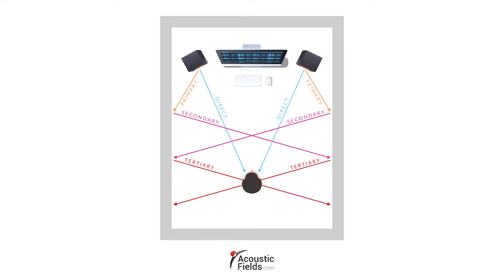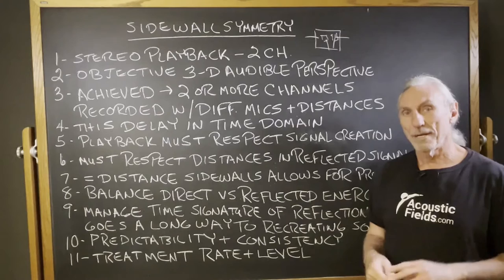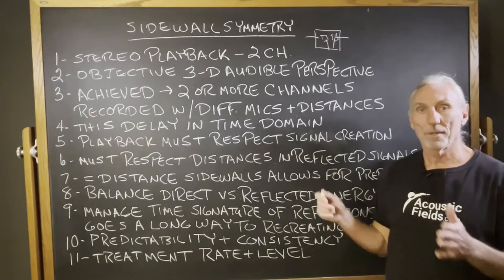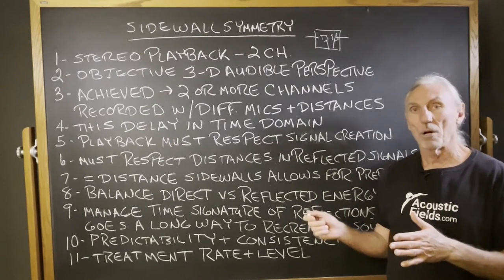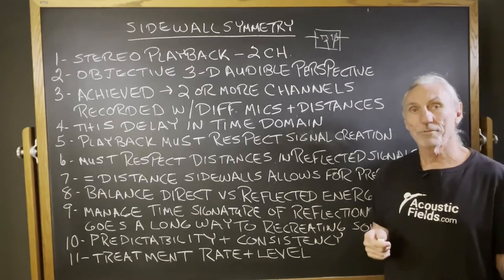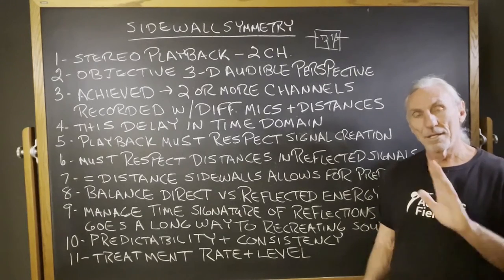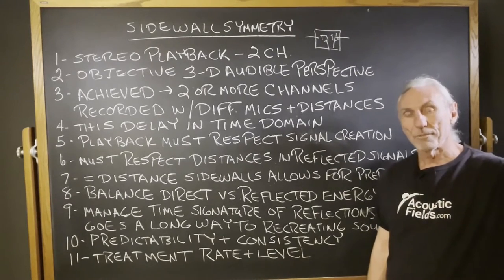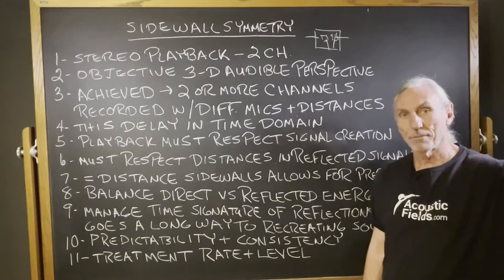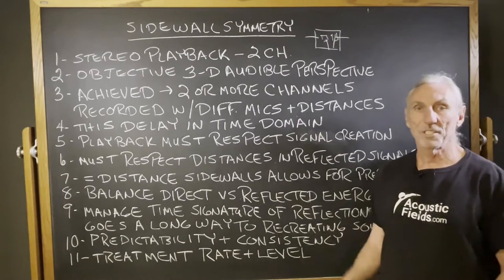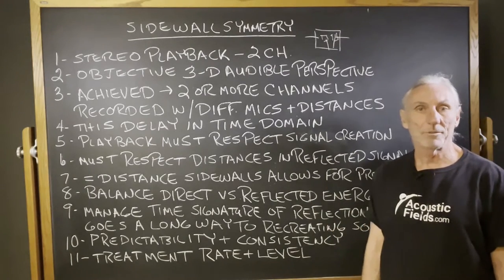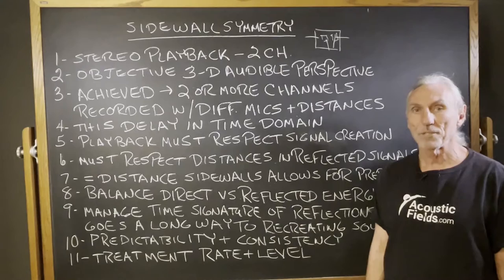We have to have symmetry. If we're three feet from the right channel, we have to be three feet from the left channel. I see a lot of situations where we have a right channel sidewall but no left channel wall. You can't have that, because the distance the reflection travels on the left with no wall versus the distance on the right creates a phase issue.